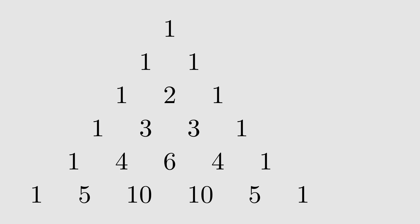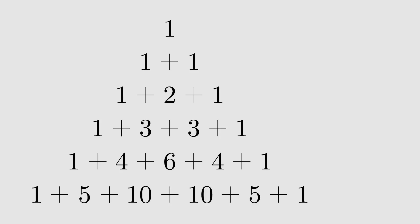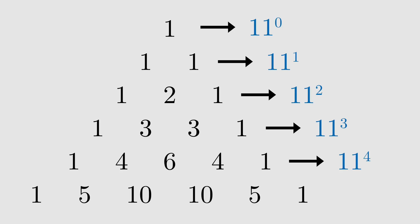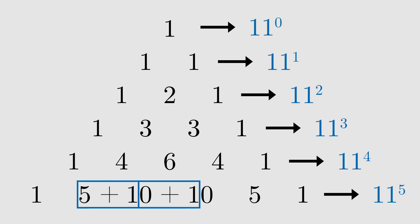One of the most well-known patterns in Pascal's triangle is that if you add up the numbers in each row, you get the powers of 2. A similar trick is that if you read the numbers from left to right, you get powers of 11.